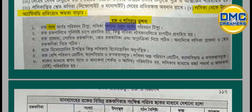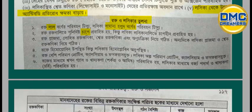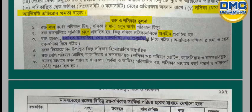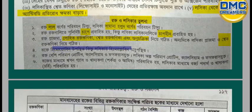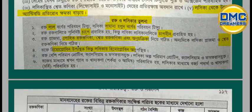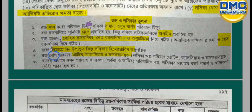Lymph is formed from blood. When blood coagulates, lymph separates out. Lymph contains only white blood cells (shwet rakta konika) — it does not contain red blood cells. Therefore lymph does not contain hemoglobin. Blood contains protein, calcium, and phosphorus in large amounts, whereas lymph contains these in lesser quantities.